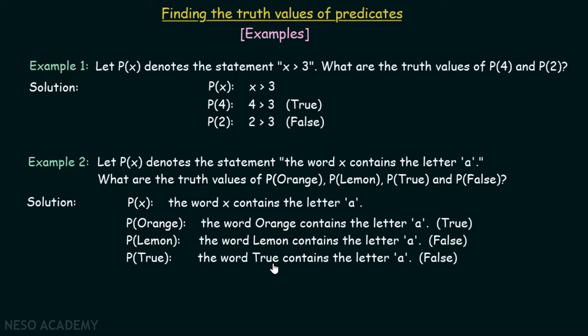What about P(true)? True does not contain letter a, that is why it is false. And what about P(false)? The word false contains the letter a. This is true because this word contains letter a. The truth value of this statement is true.